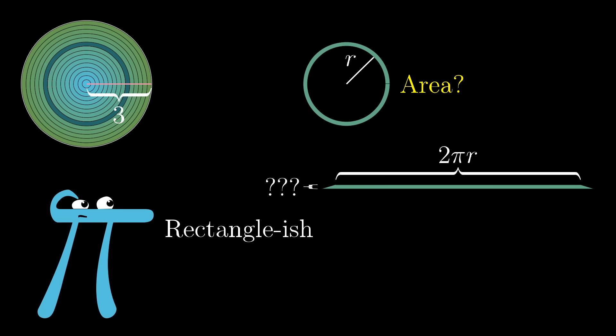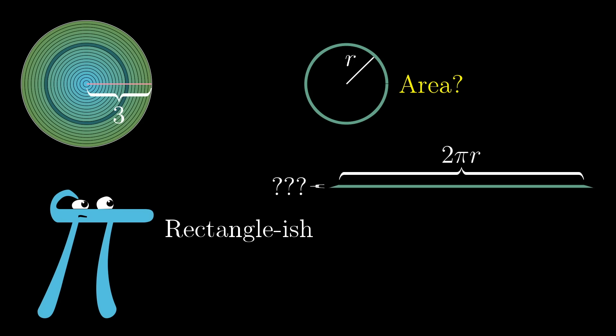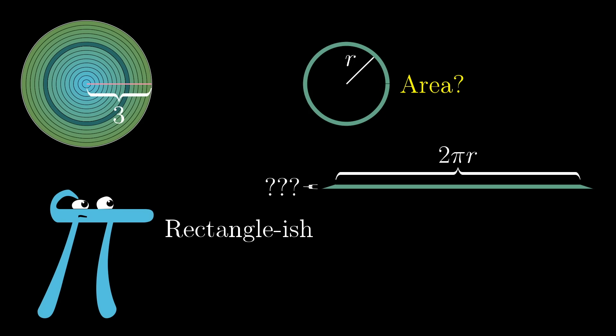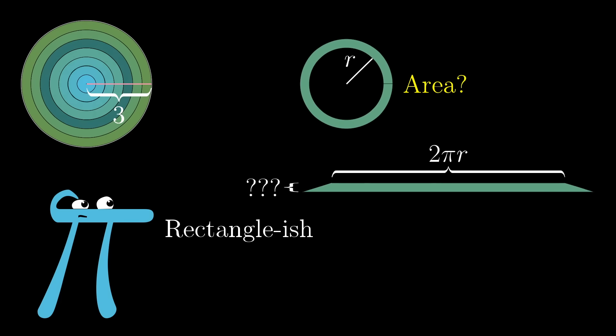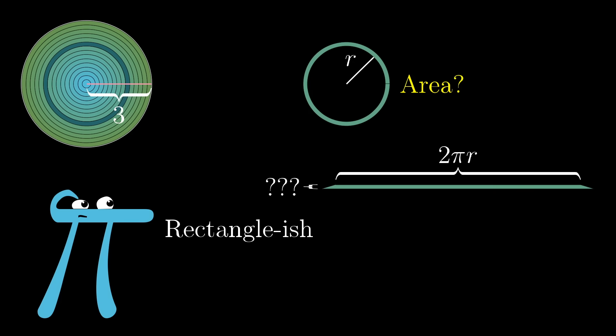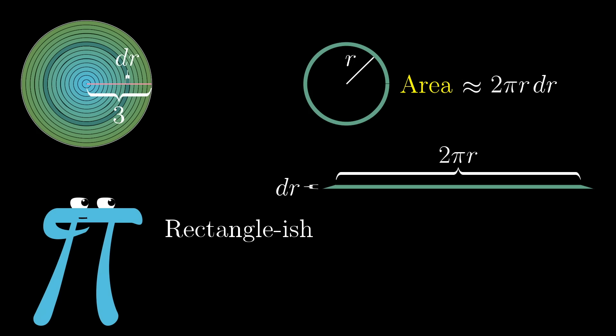And its thickness? Well, that depends on how finely you chopped up the circle in the first place, which was kind of arbitrary. In the spirit of using what will come to be standard calculus notation, let's call that thickness dr, for a tiny difference in the radius from one ring to the next. Maybe you think of it as something like 0.1. So approximating this unwrapped ring as a thin rectangle, its area is 2 pi times r, the radius, times dr, the little thickness.